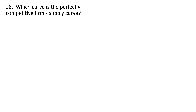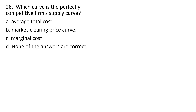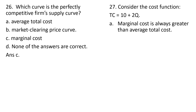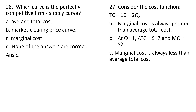Question 26. Which curve is the perfectly competitive firm's supply curve? C, marginal cost. Question 27. Consider the cost function. Marginal cost is always greater than average total cost — that is false. Marginal cost is always less than average total cost — at Q equals 1, average total cost is $12 and marginal cost is $2, so that is correct. Answer choice D — marginal cost is always less than average total cost — is correct given this cost function.